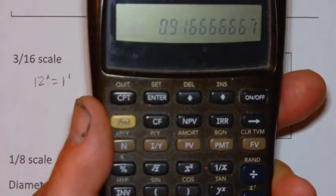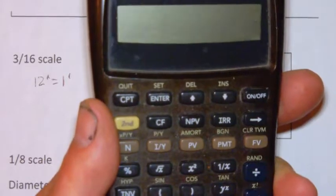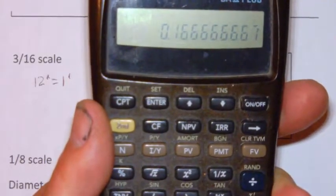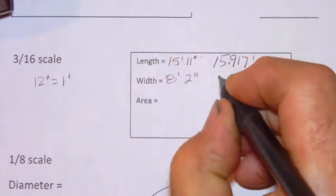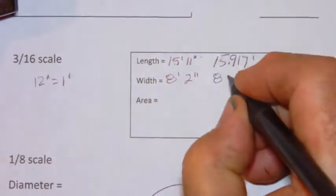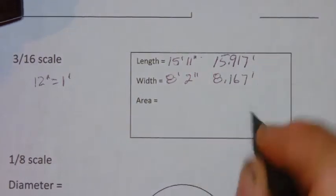Let's do the same thing for the two inches. So two divided by twelve equals 0.166 feet. Therefore the width is 8.167 feet.